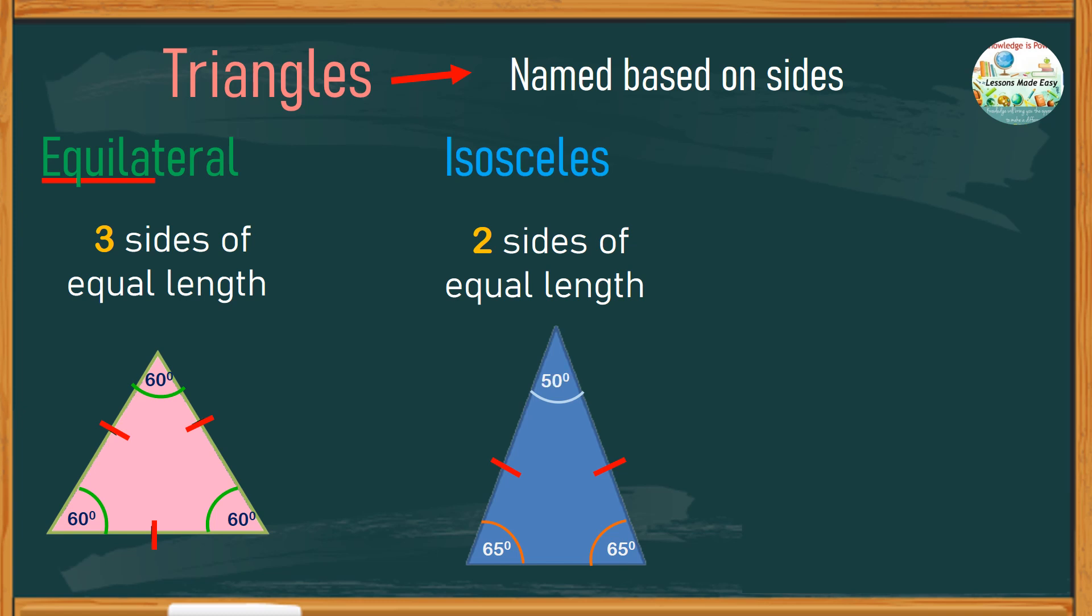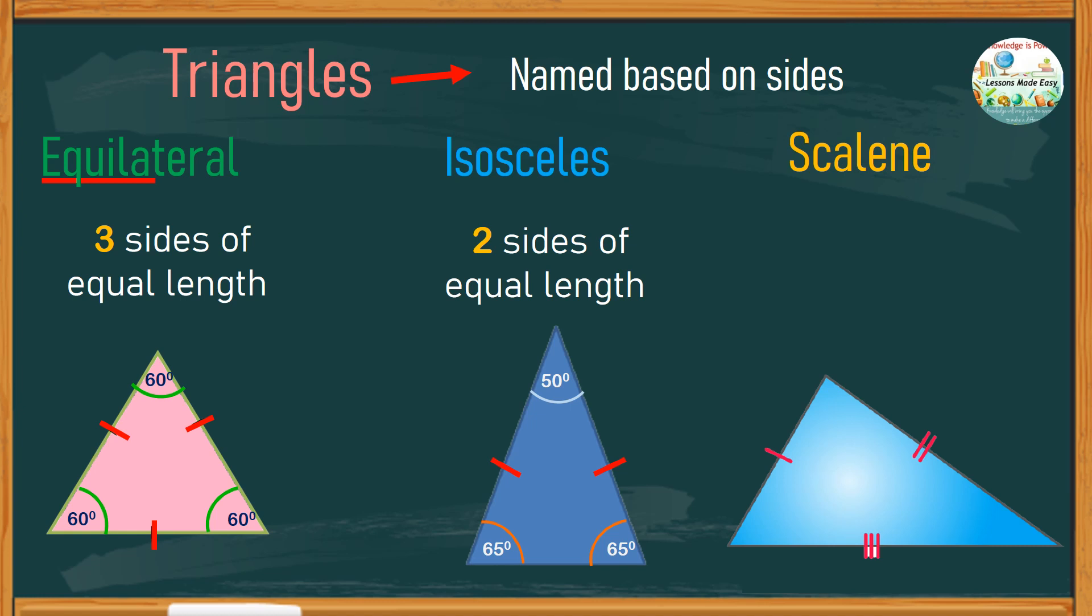Another type of triangle is a scalene triangle. Notice that this type does not have any equal sides. All the three sides are of different lengths. Therefore, all the angles have different sizes as well. But still, all together would add up to 180 degrees.